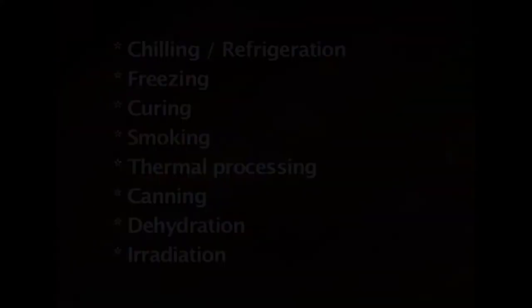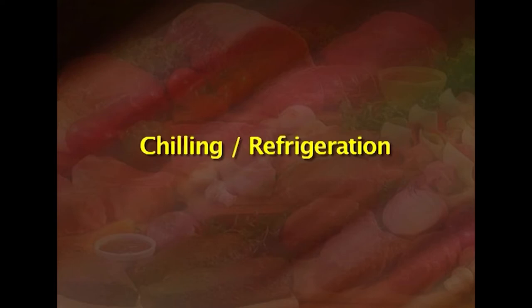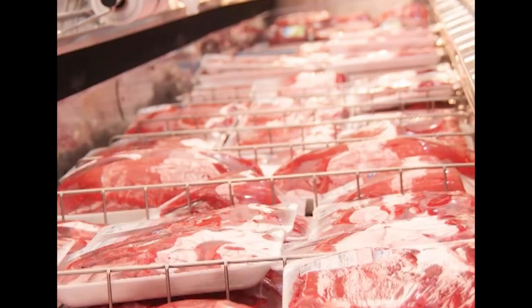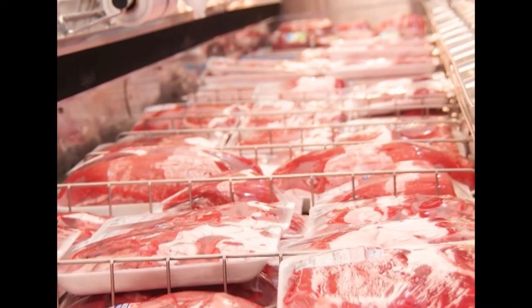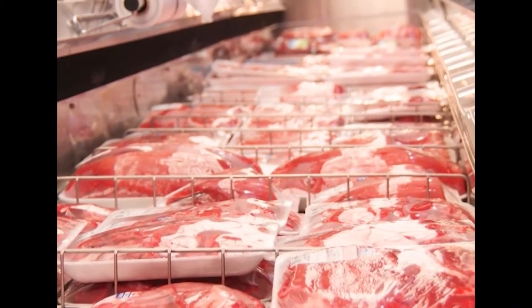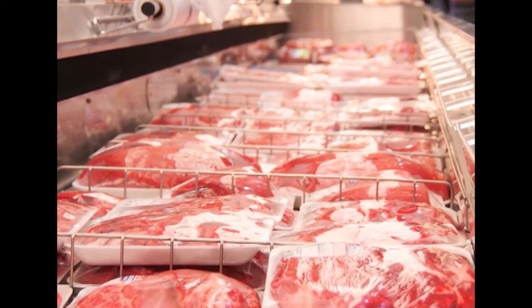The first method is chilling and refrigeration, which is the most widely used method for short-term storage of meat because chilling or refrigeration slows down microbial growth and enzymatic as well as chemical reactions. Storage of fresh meat is done at a refrigeration temperature of 2 to 5 degrees centigrade, and fresh meat is maintained in good condition for 5 to 7 days at 4 ± 1 degree centigrade.